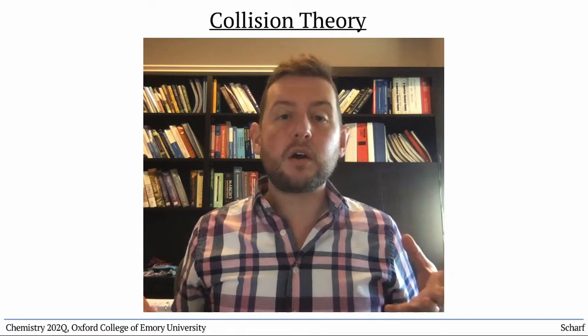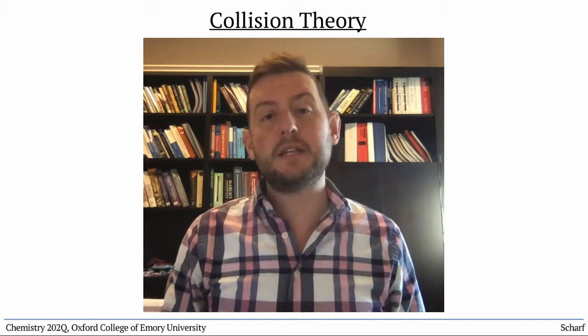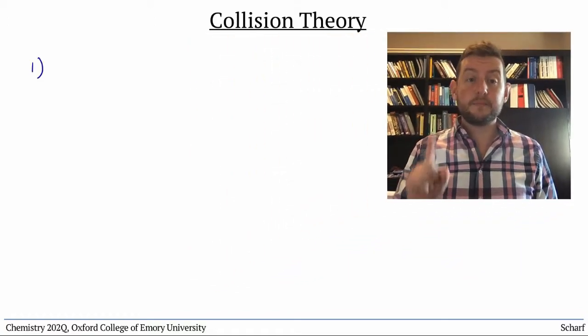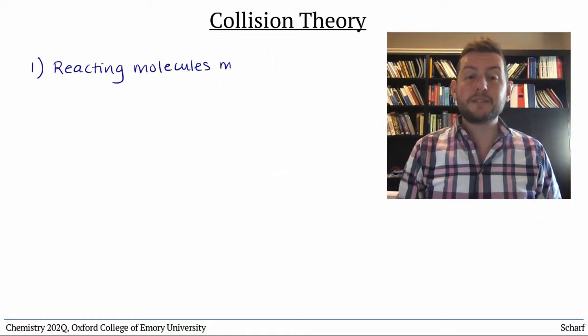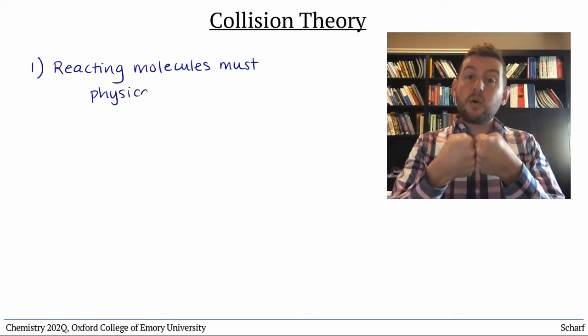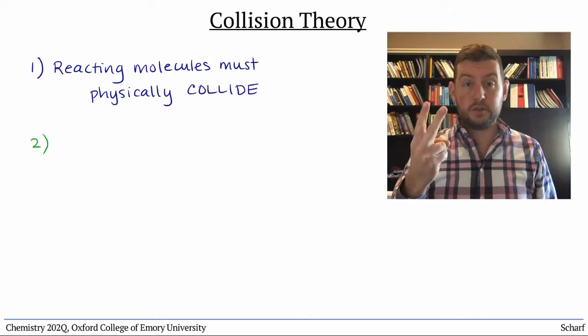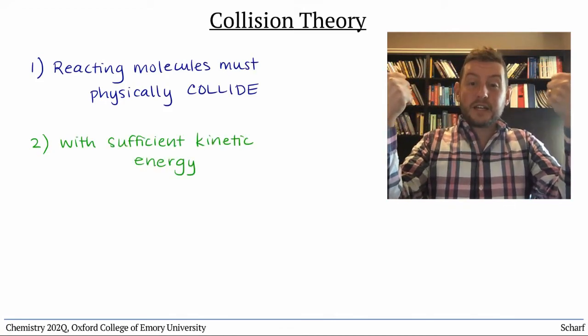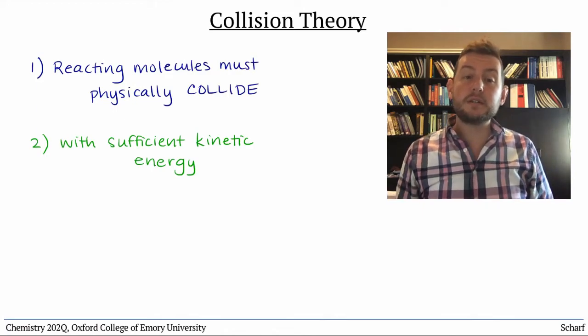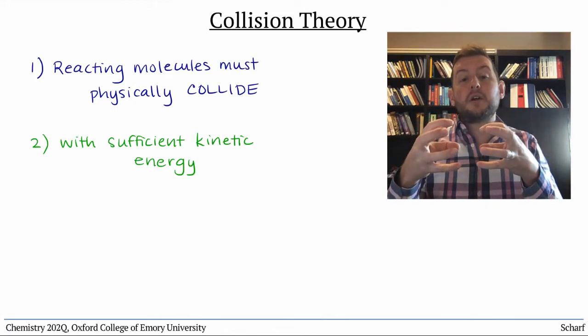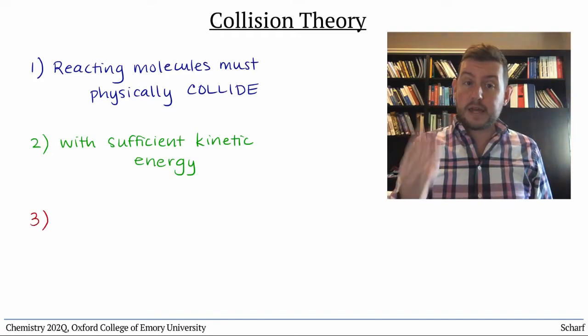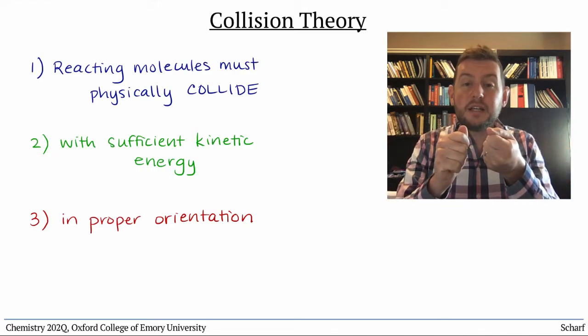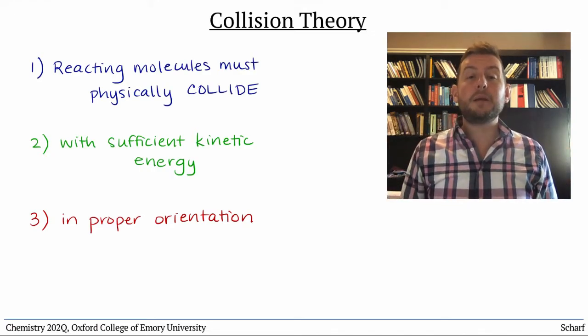Chemical reactions can only occur under a precise set of conditions. For a chemical reaction between two molecules to occur: number one, the reacting molecules must physically hit or collide with one another. Two, the reacting molecules must collide with sufficient kinetic energy to overcome the attractive forces that hold a particular electron pair in place. And three, the molecules must collide in the proper orientation so that any newly forming bonds can be made.